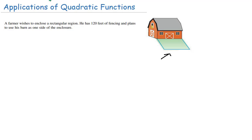He has 120 feet of fencing and plans to use his barn as one side of the enclosure. So we basically need three sides of fencing. We're going to come up with a quadratic function to describe this rectangular region and help the farmer figure out what the maximum area would be that he could enclose with the amount of fencing that he has.